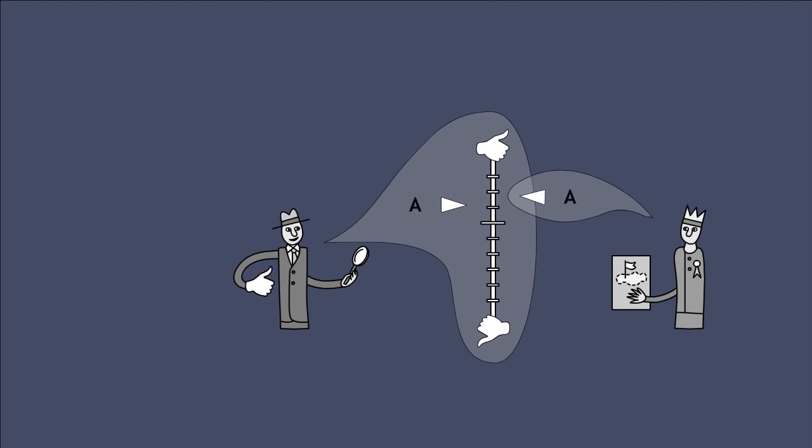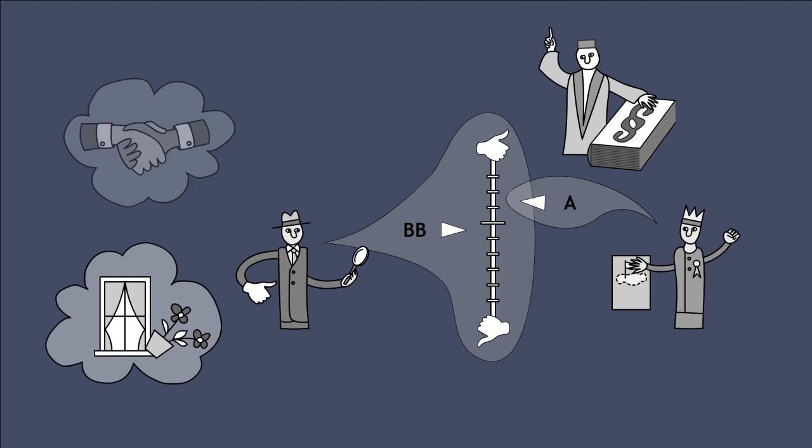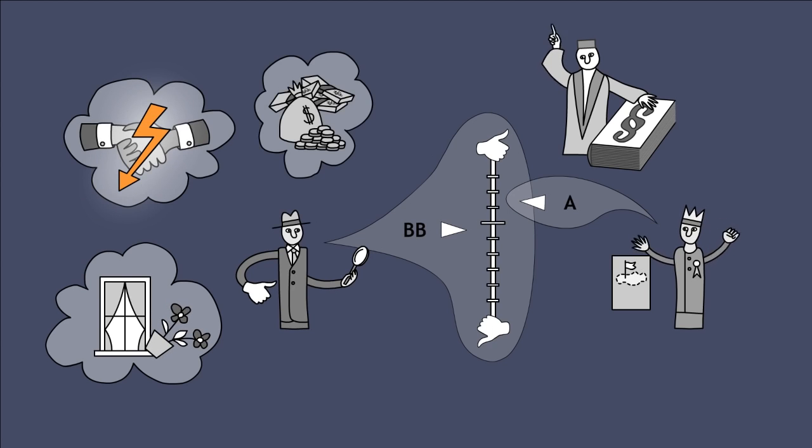It should be possible to make rating agencies liable for grossly unrealistic ratings, because these are often caused by negligence, conflict of interest, or simple greed for profit.